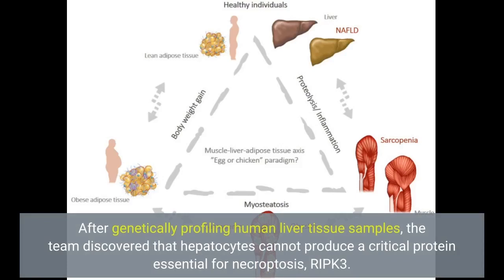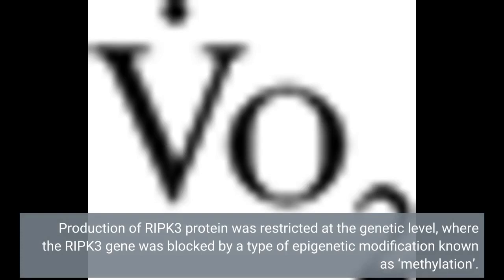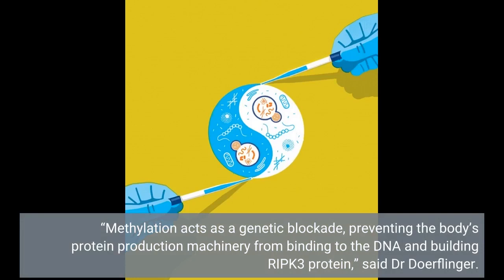After genetically profiling human liver tissue samples, the team discovered that hepatocytes cannot produce a critical protein essential for necroptosis: RIPK3. Production of RIPK3 protein was restricted at the genetic level, where the RIPK3 gene was blocked by a type of epigenetic modification known as methylation. Methylation acts as a genetic blockade, preventing the body's protein production machinery from binding to the DNA and building RIPK3 protein, said Dr. Dorfelinger.